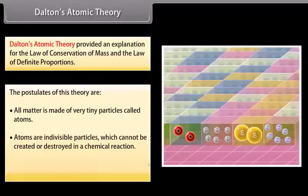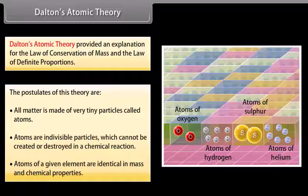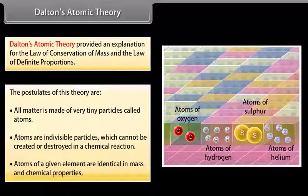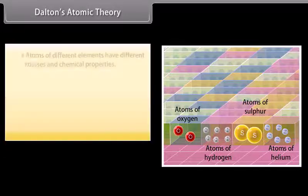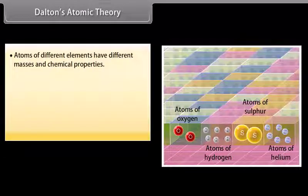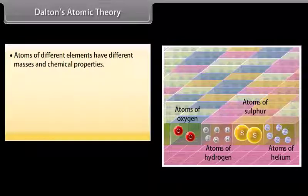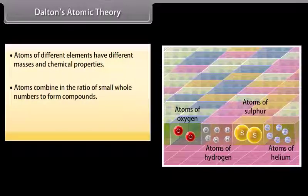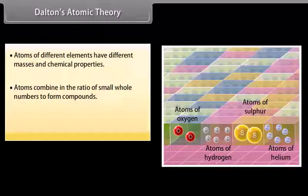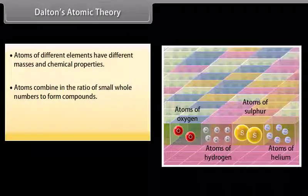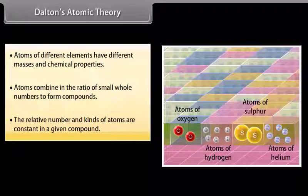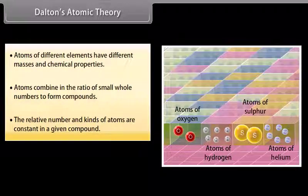3. Atoms of a given element are identical in mass and chemical properties. 4. Atoms of different elements have different masses and chemical properties. 5. Atoms combine in the ratio of small whole numbers to form compounds. 6. The relative number and kinds of atoms are constant in a given compound.